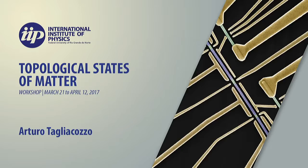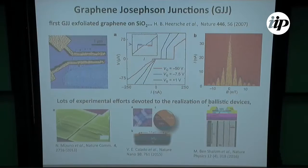It's ten years by now that Josephson junctions with graphene are being built, and most of the effort is in the realization of ballistic devices.